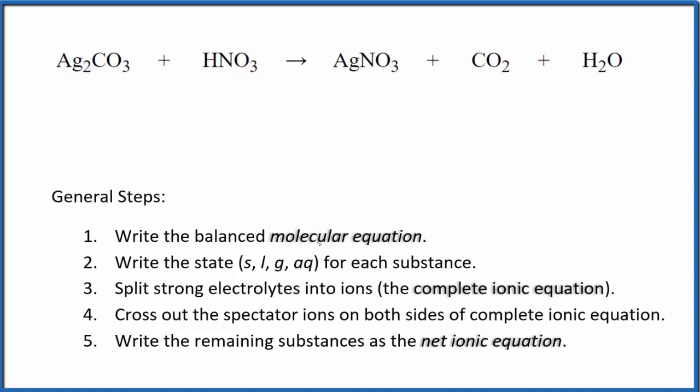So the first thing we need to do is balance the molecular equation. This is the molecular equation here. You can see I have two silver atoms, just one here. Let's put a 2 in front of the AgNO3. That balances the silvers, but now I have two of these nitrates here. So I need to put a 2 in front of the HNO3.